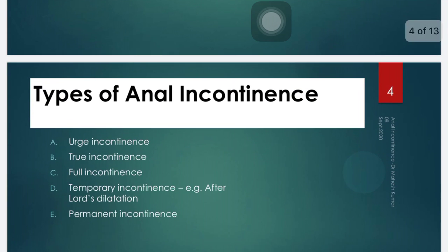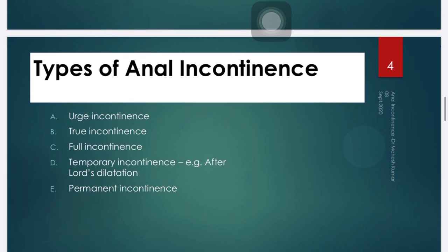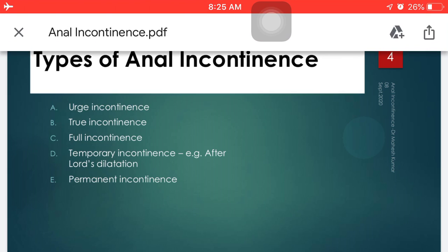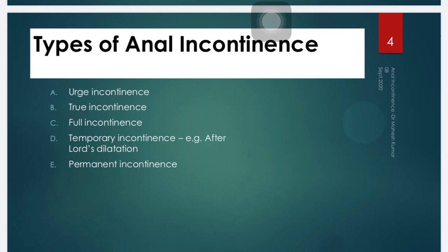What are the types of anal incontinence? It is categorized in different ways: urge incontinence, true incontinence, full incontinence, temporary incontinence, and permanent incontinence. Basically, the two main types — temporary and permanent incontinence — are most significant. Temporary incontinence involves minor cases, often developing after large dilatation procedures, and can be managed conservatively. Permanent incontinence is more difficult in nature and not easy to cure in some conditions.